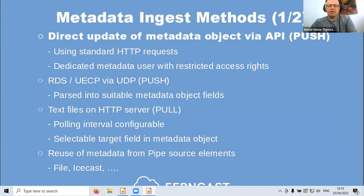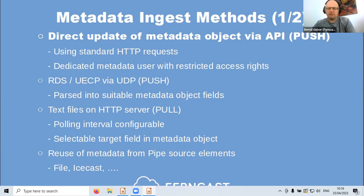Starting with ingest: how do you get metadata into our system? The first method — and this is the recommended one, and many customers use it — is that you can directly interact with the metadata object via an API. You push with a connector script or connector software using standard HTTP requests. Usually you use a system user with restricted access rights, so you can only change the metadata of one station or all stations as you wish.